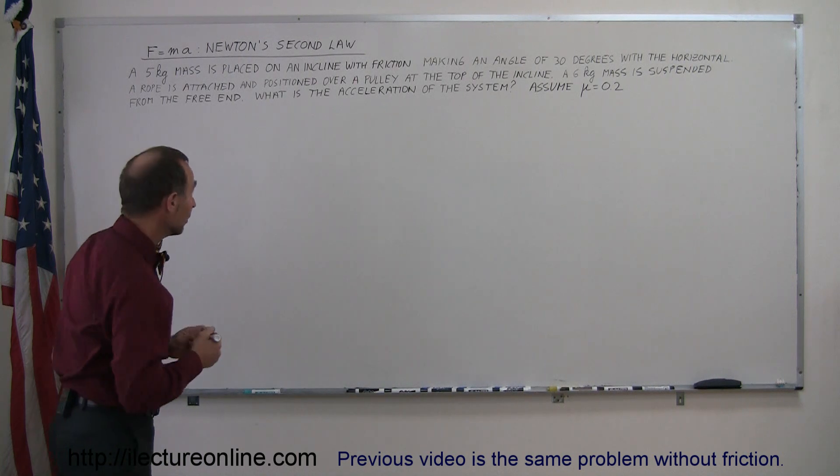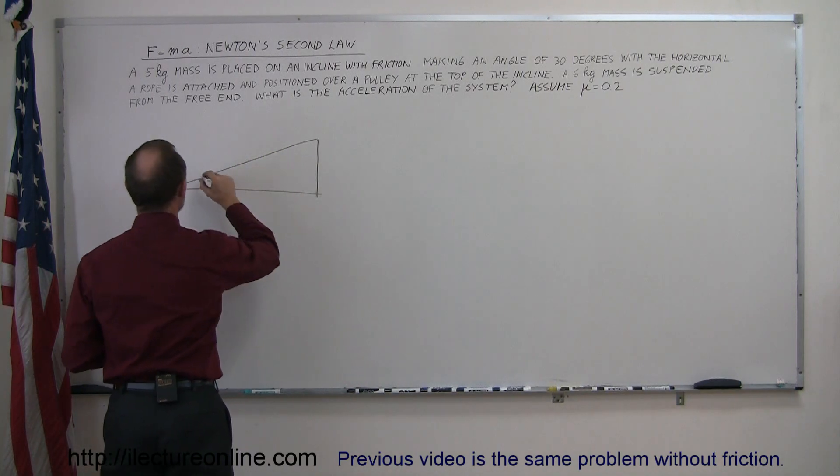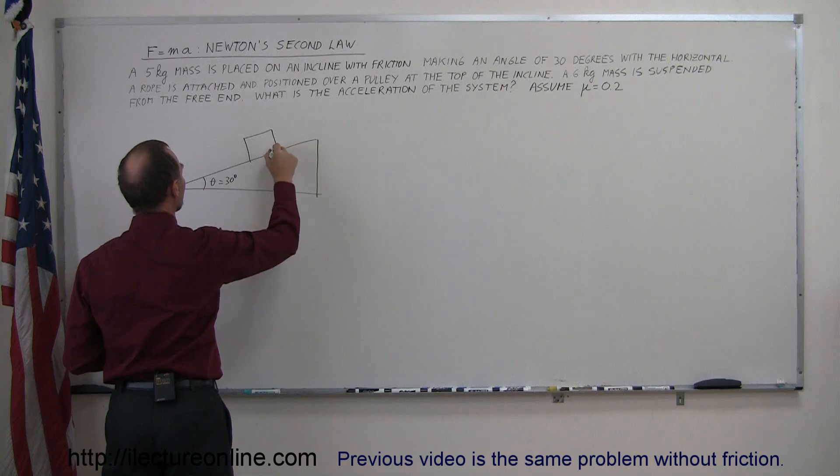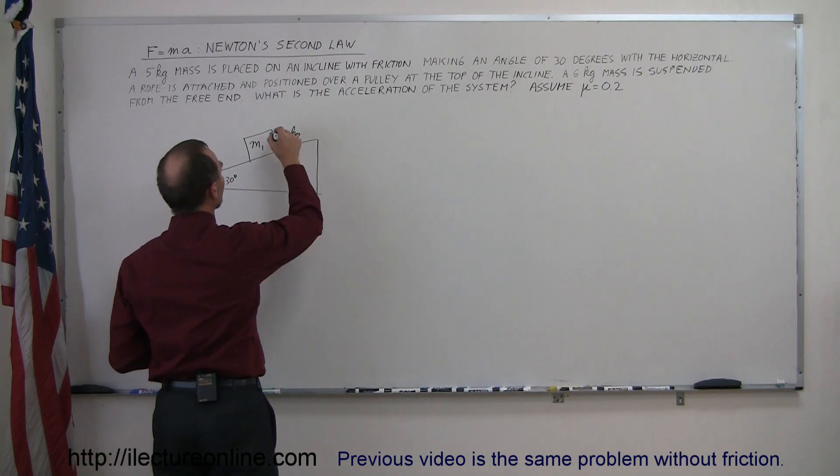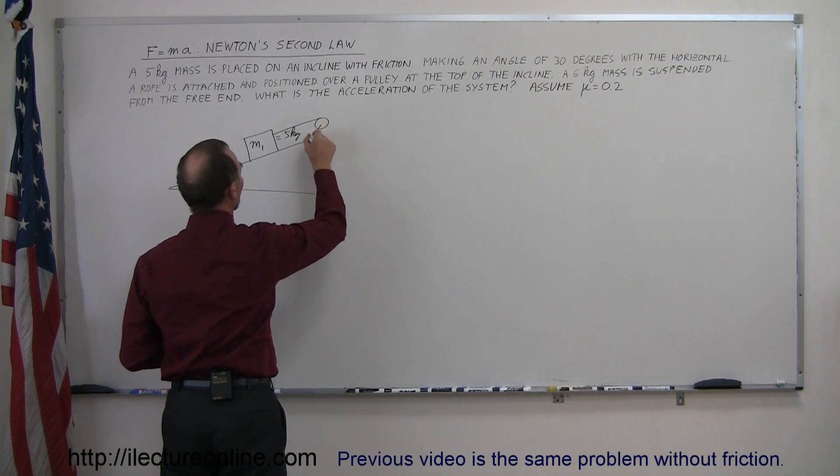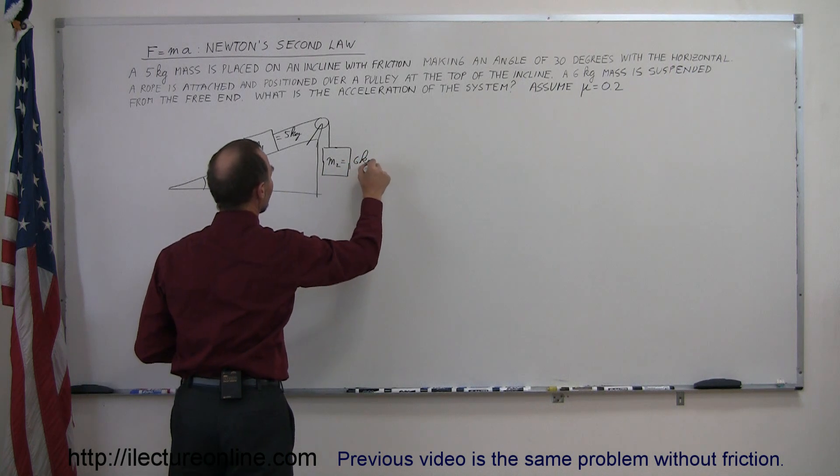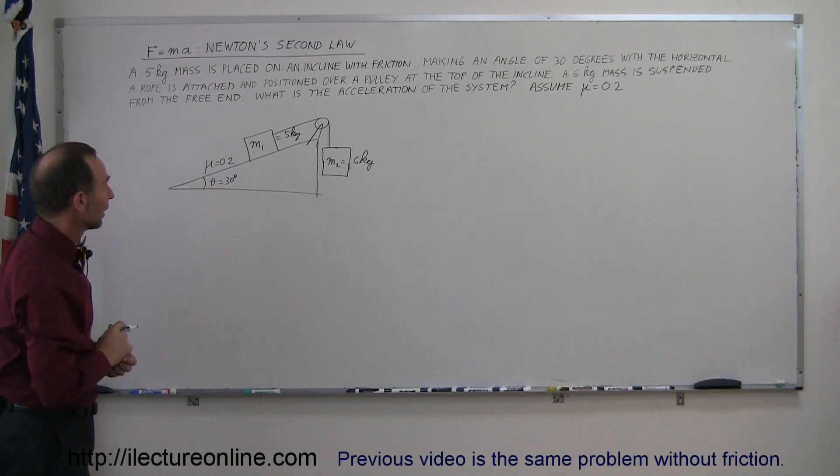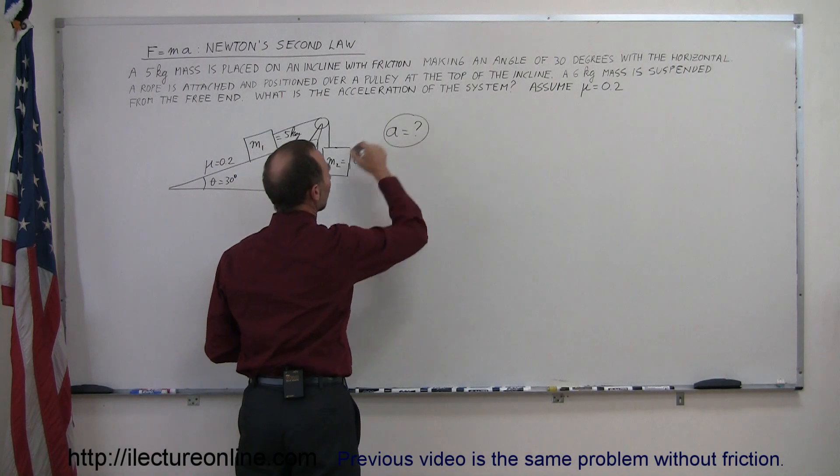We'll make a drawing to visualize what this problem is all about. We have an incline, the angle theta equals 30 degrees. We place a mass on the incline, let's call this mass one, that's equal to five kilograms. We hang a rope on that, over the pulley, the other side we attach a six kilogram mass, let's call that m2. In this case we know that mu equals 0.2, friction between mass one and the incline. They're asking us what is the acceleration of the whole system.